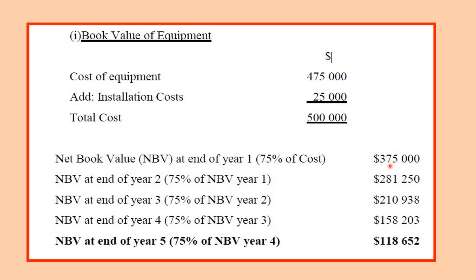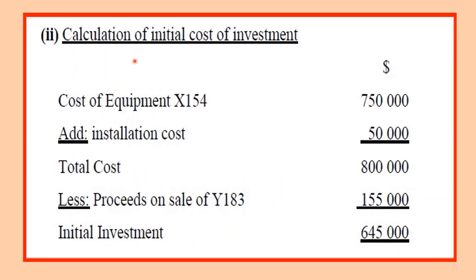Next year we take 75% of the net book value from the previous year and work down to the end of the five-year period. We end up with approximately $59,638 — sorry, $186,523 — as the net book value of the equipment at the end of year five. This is required before we can compute the initial cost of the investment.